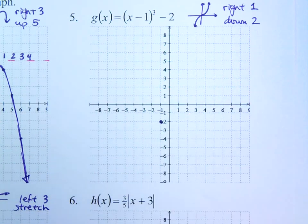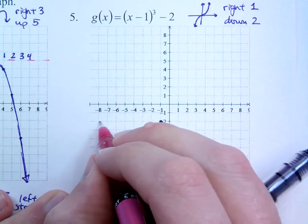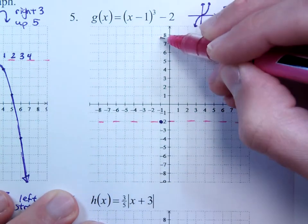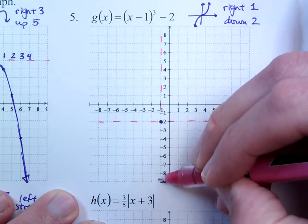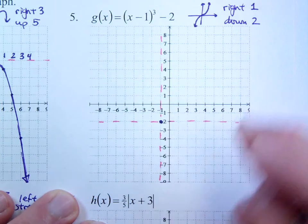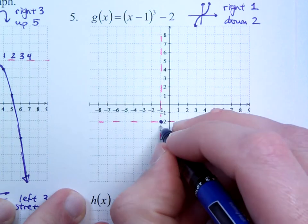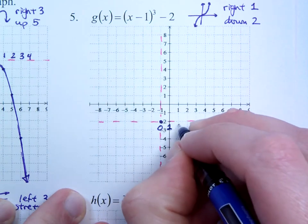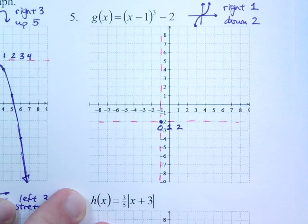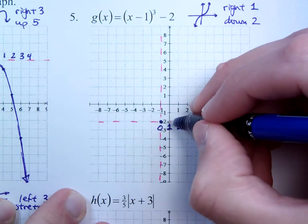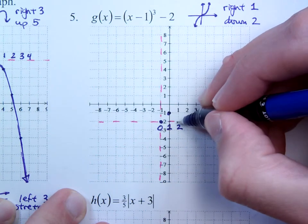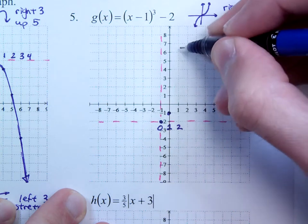Now this guy doesn't have a vertex, but again, we're going to be using his key point that was located at the origin as the base point, how I move everything. So the key points here would have been 0, 1, and 2. And I use the fact that it's a cubing function. So 1 to the 3rd is 1, 2 to the 3rd is 8, so 8 units up is right here.